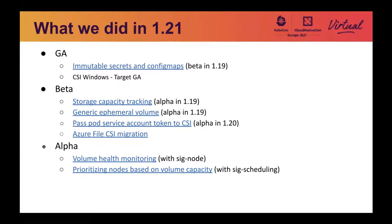This feature serves as a stepping stone towards problem detection and resolution of individual volume health issues by Kubernetes. We also have a new alpha feature in 1.21: prioritizing nodes based on volume capacity. Without this feature, Kubernetes didn't take volume capacity into account when scheduling a pod that can run in multiple topologies. A large PV may be used by a PVC with a small capacity request, even if there are many suitable small PVs in other topologies. PVCs with a large capacity request may not find feasible PVs to use if too many large PVs are consumed by PVCs with a small capacity request. With this feature, the scheduler takes volume capacity into account to ensure balanced resource usage, prioritizing nodes based on the best matching size of statically provisioned PVs.